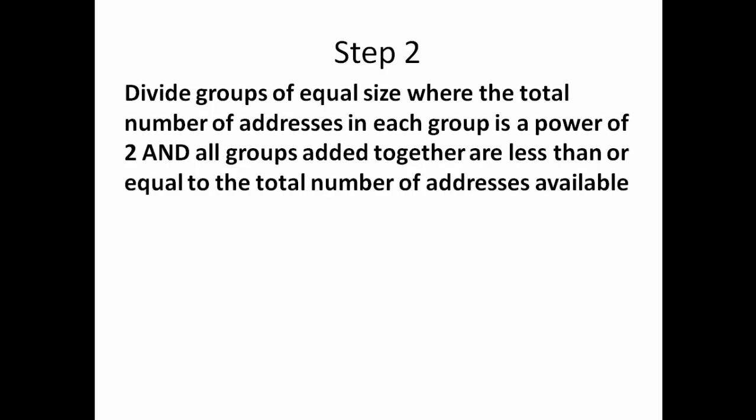So what do we do next? We take that number that we got, T, 2,048, and divide that number into groups. Each group must be a power of 2, and all groups added together must be less than or equal to the number of total addresses that we have.